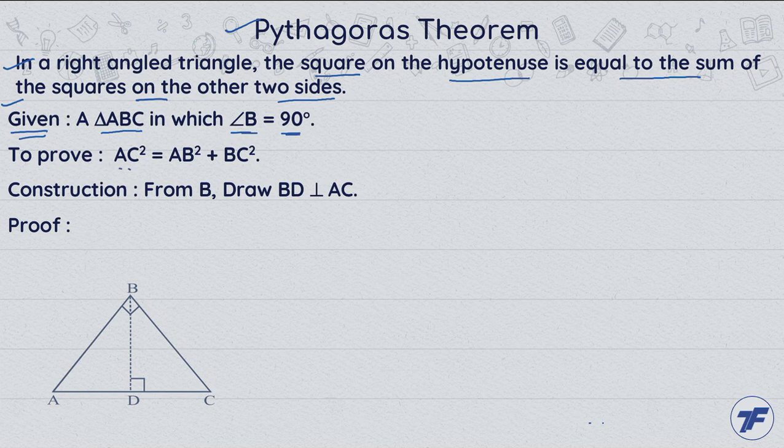To prove: AC squared, hypotenuse squared, equal to the sum of the squares of the other two sides.